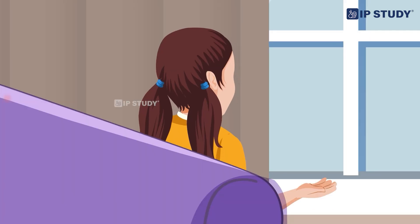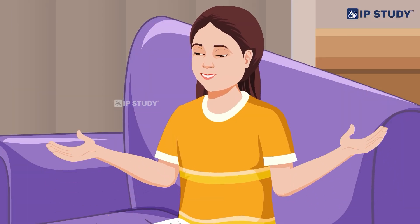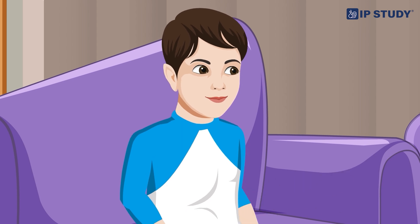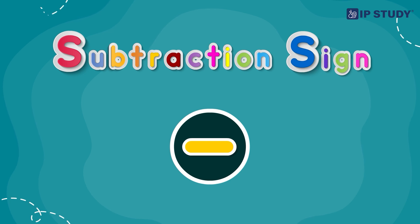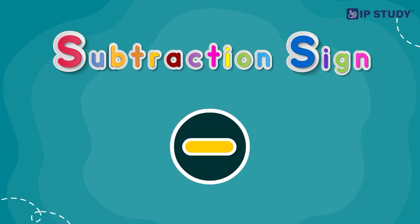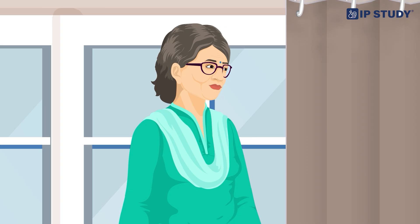Grandpa asks if the kids know about the subtraction sign. Neither Urvashi nor Aman knows what it is. Grandpa explains that when something is taken away we say it is subtracted, and introduces the subtraction sign. Aman says he now understands and asks to learn more about subtraction.